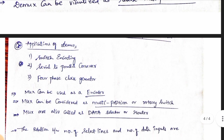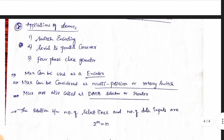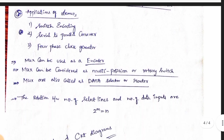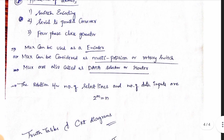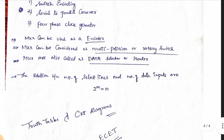The applications of demux include switching encoding, serial-to-parallel converter, and four-phase clock generator. Mux can be used as an encoder, and demux can be used as a decoder. Mux can be considered as a multiposition or rotary switch.